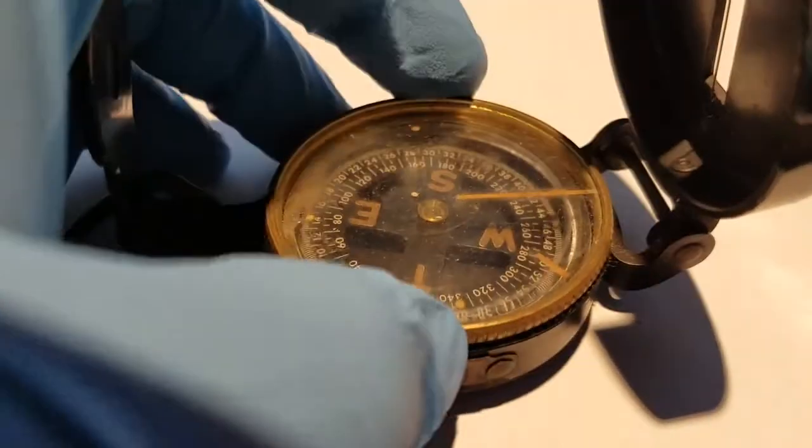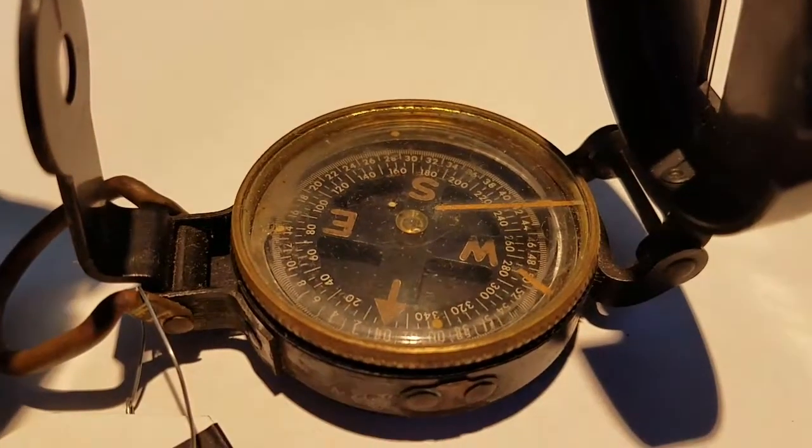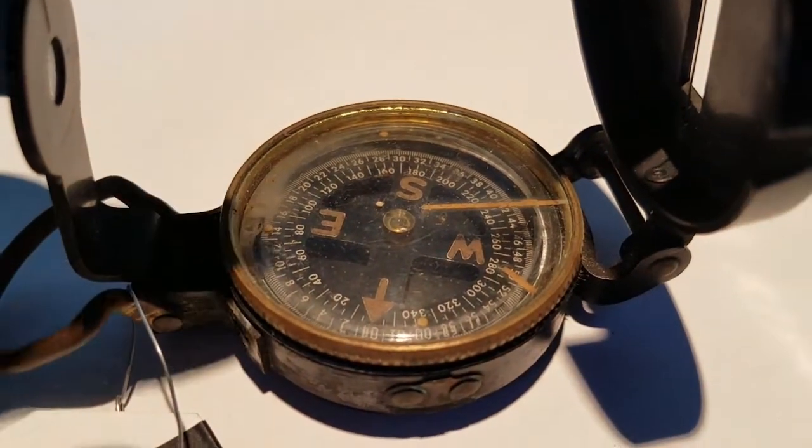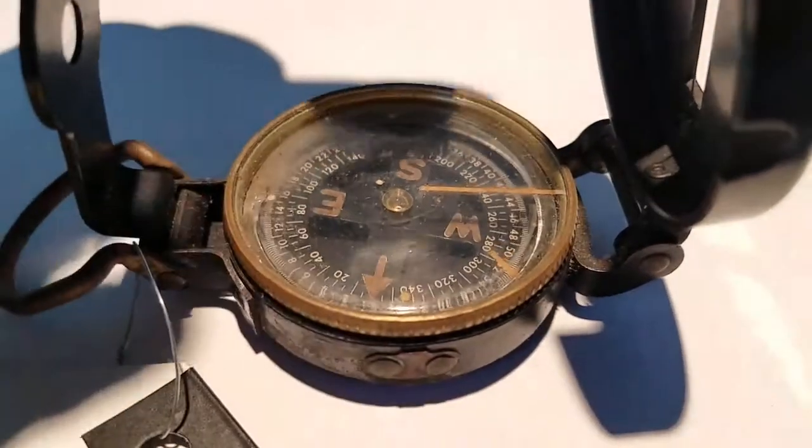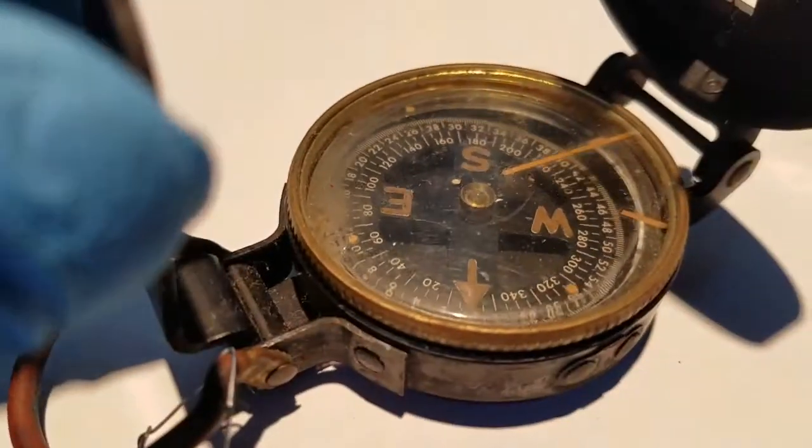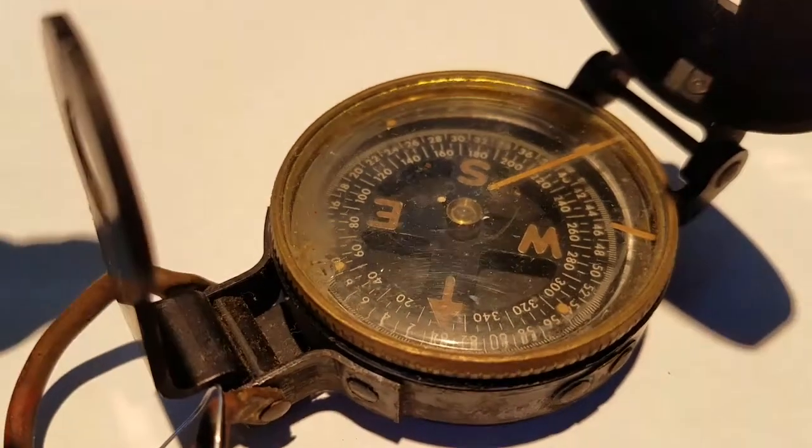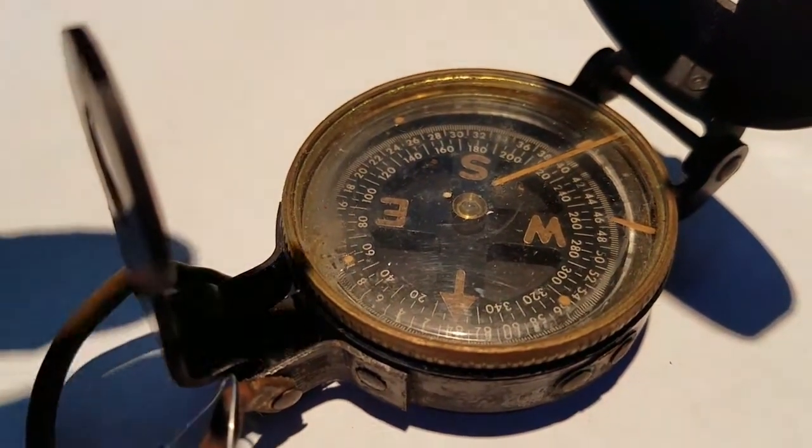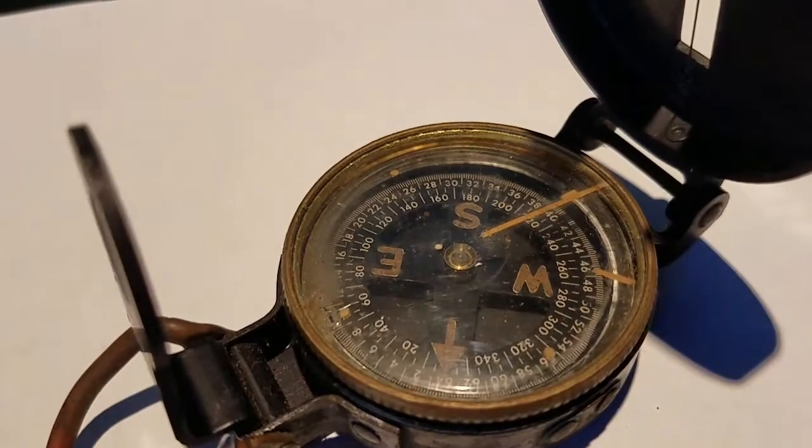This particular compass happens to have been painted with radium. All those brown, burned lines you see are radium, and this compass is actually fairly hot. Let me show you. First of all, the radium paint under blacklight...